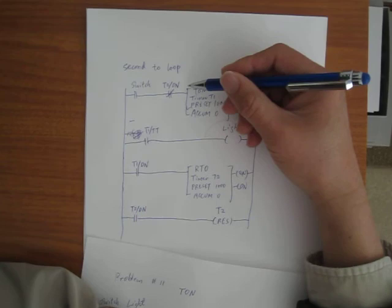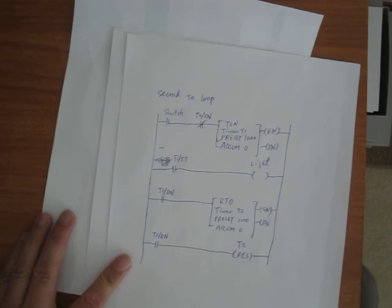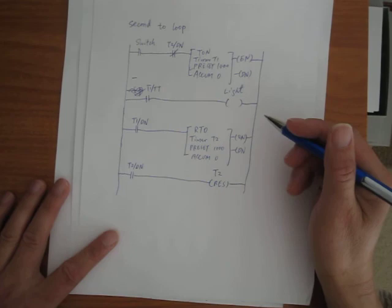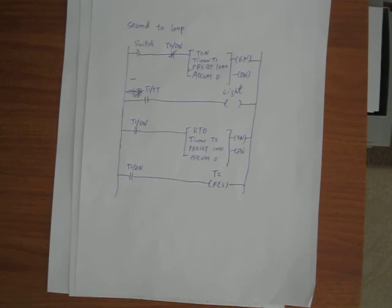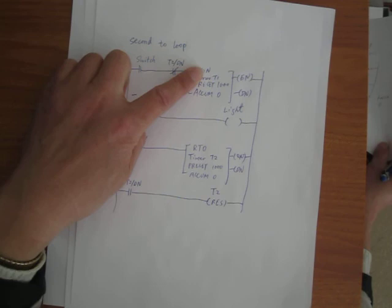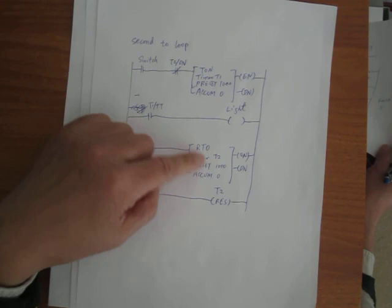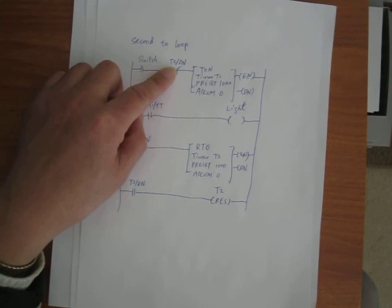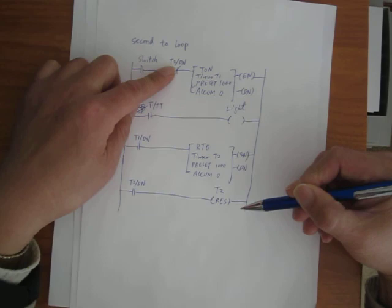I can use that reset to reset T2. By the time T2 DN is true, the reset fires, which turns the timer off. Once the timer turns off, DN becomes false again. The program scans from this rung to this rung — we probably need just some sequence. I think that's a better way to reset it.